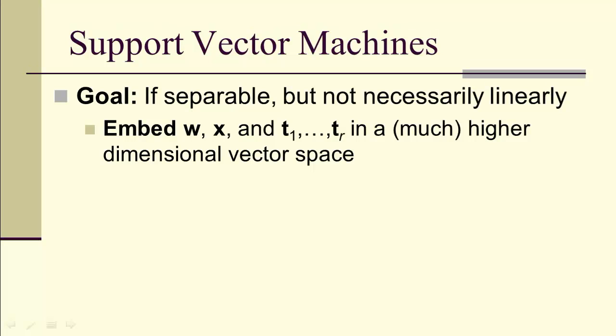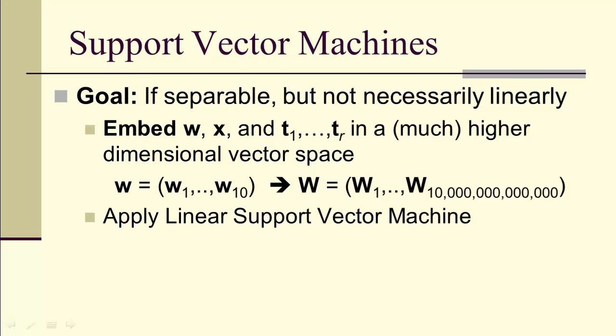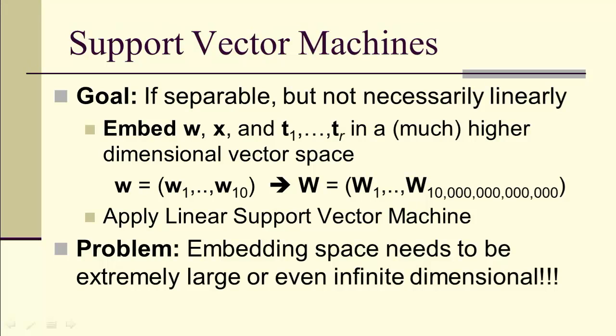We can take our feature vectors and our x's and our parameter vector w, and we can go up into a much larger vector space. Maybe from a 10-dimensional vector space to a 10-trillion dimensional vector space. And then apply the linear support vector machine in the 10-trillion dimensional vector space.